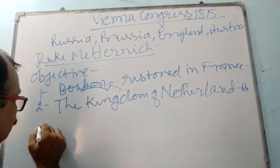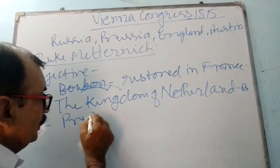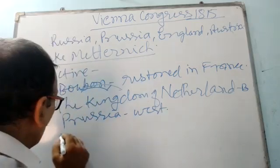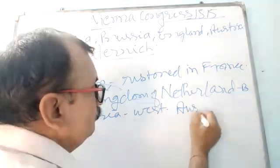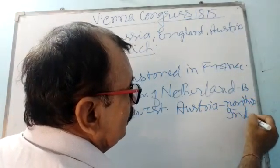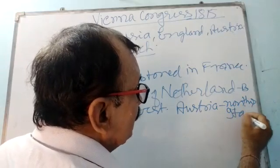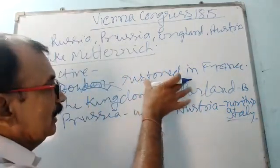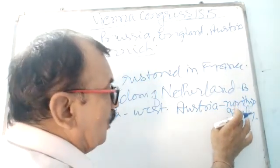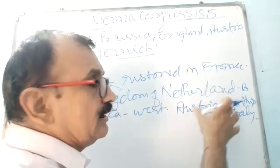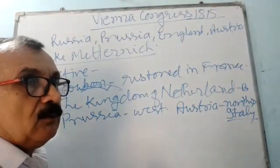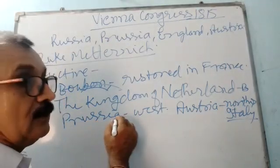In the West, Prussia got important territories on the Western Front. And Austria got Northern Italy in the South, so it became strong. In this way, strong states were established both in the South and in the West around France.